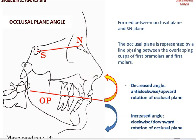The fourth angle is the occlusal plane angle, formed between the occlusal plane and the SN plane. The occlusal plane is represented by a line passing between the overlapping cusp tips. A decreased angle shows an upward, anti-clockwise rotation of the occlusal plane, whereas an increased angle shows a clockwise or downward rotation. The mean reading is 14 degrees; anything beyond that requires assessment of the direction of rotation.